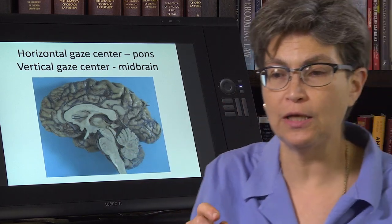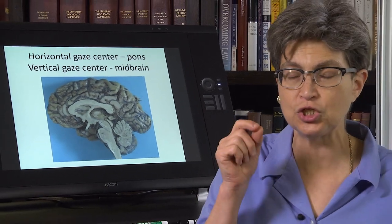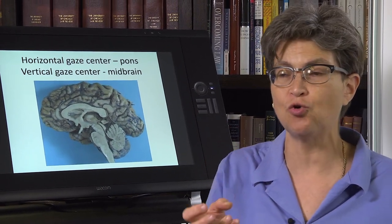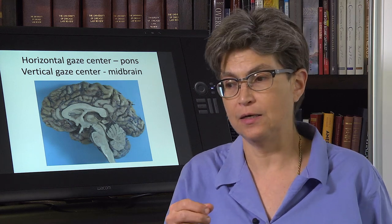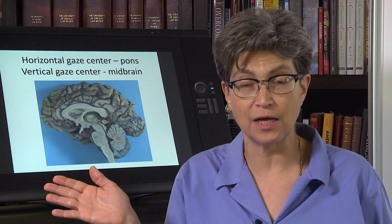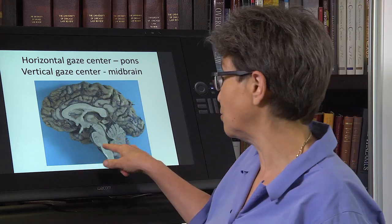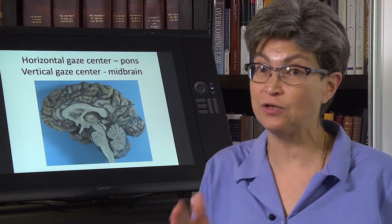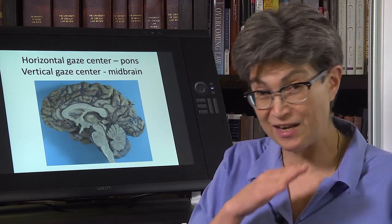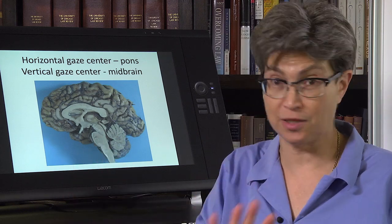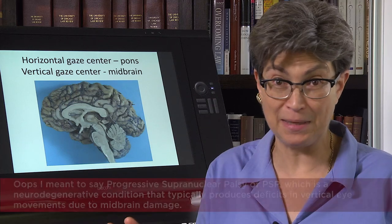That's really all I have to say in this video, but I'm going to repeat it because it is so important and so useful to you. If there is a deficit in horizontal eye movements, then you might consider looking in the pons. But if there is a deficit in vertical eye movements or torsional eye movements, then you have no interest in the pons — that is not where the problem can lie.